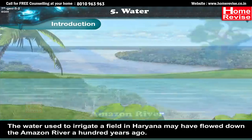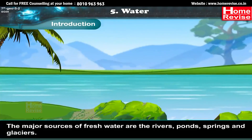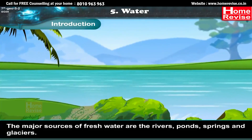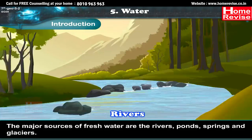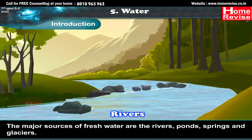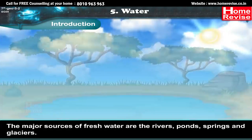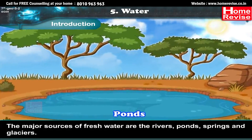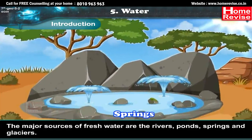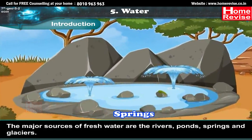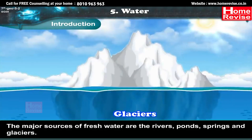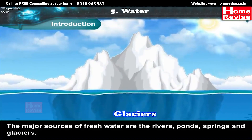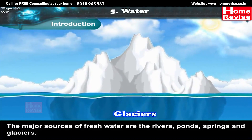The major sources of fresh water are the rivers, ponds, springs and glaciers.